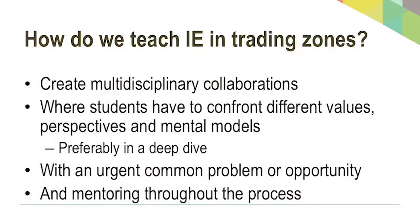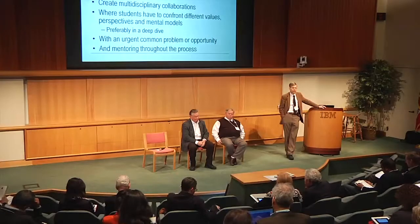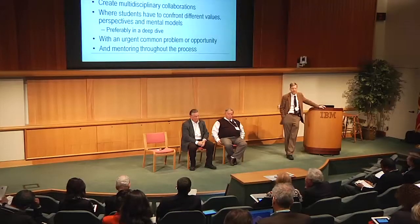We have the question of education — Phil mentioned how important it is. Some provocative tips: create multidisciplinary collaborations where students have to confront different values. This is the trading zone part of it — not every collaboration requires that kind of deep, different-value situation. Students need to confront different values, perspectives, and mental models, so that initially they don't even understand one another. The engineer says, why would anybody be an English major? And the English major says, why would anybody do engineering?